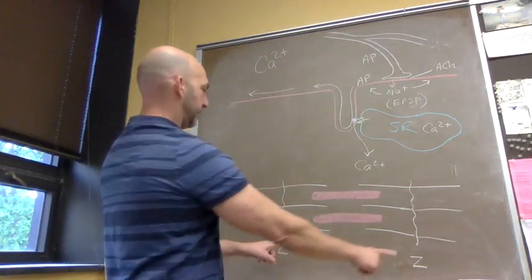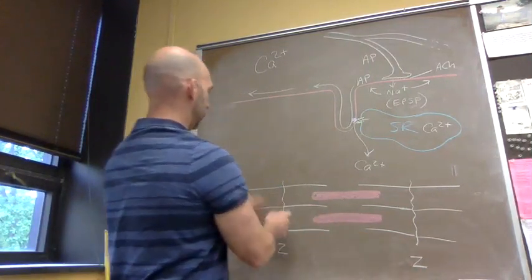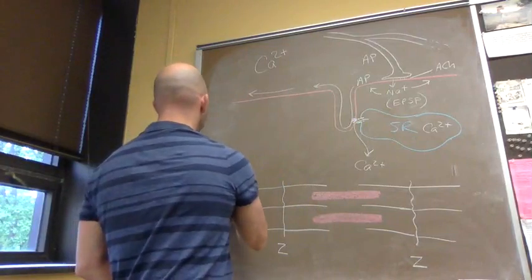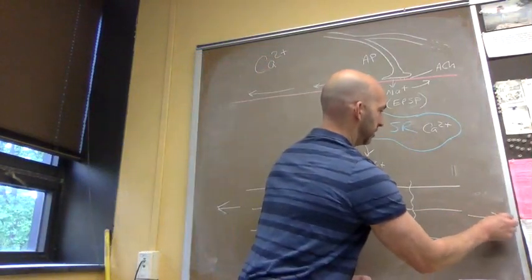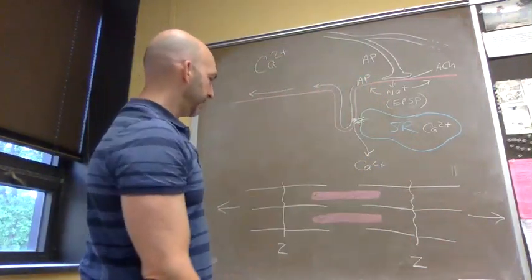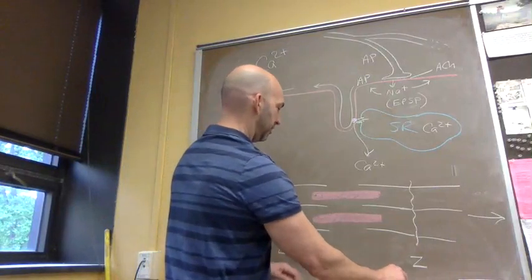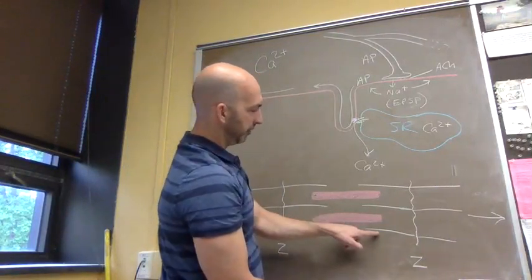A sarcomere is Z-line to Z-line, so we just have more sarcomeres in both directions from this one that we're focused on. We have the thick filament in red, thin filaments in white—the myosin filament and then the actin filament. The thin is the actin filament.